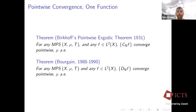If we specialize the bilinear average so that the second function is the identity — totally integrable on a probability space — we get the Cesàro averages discussed previously. If we set the first function to be constant, we get the polynomial ergodic averages first studied by Bourgain in the late eighties and early nineties.